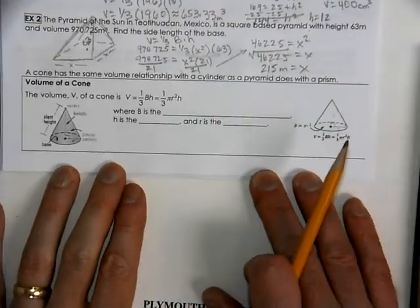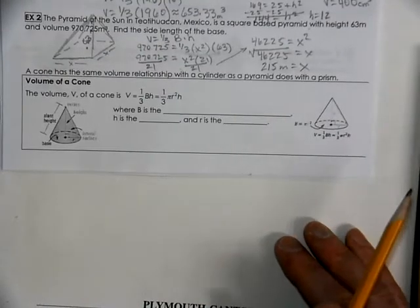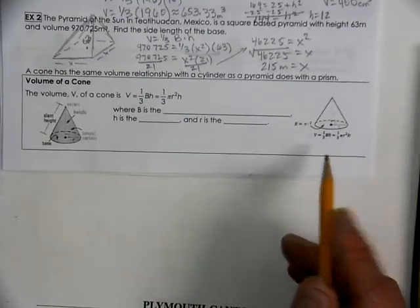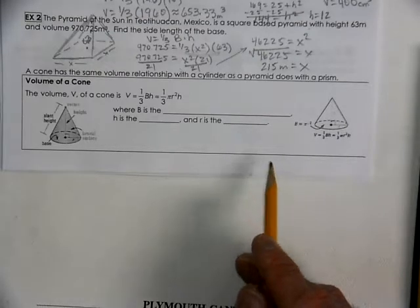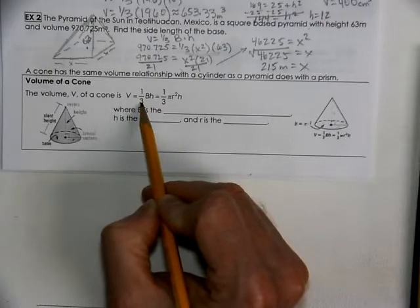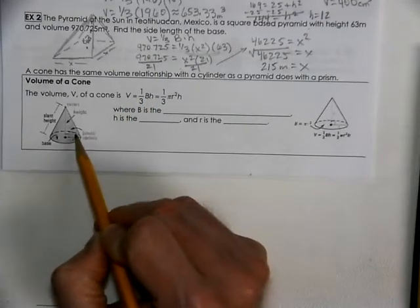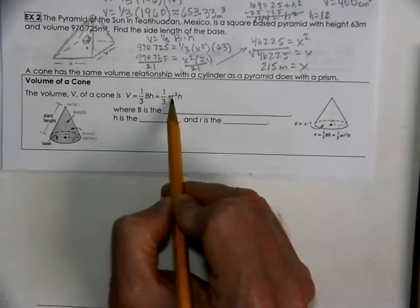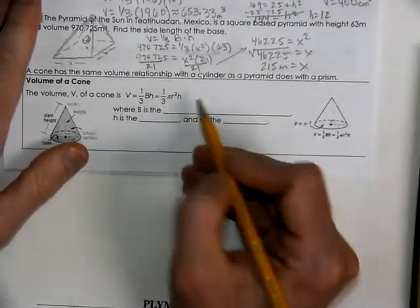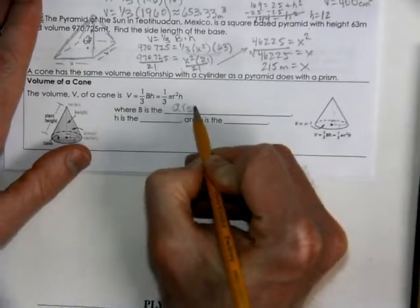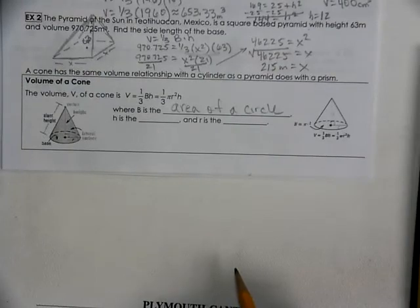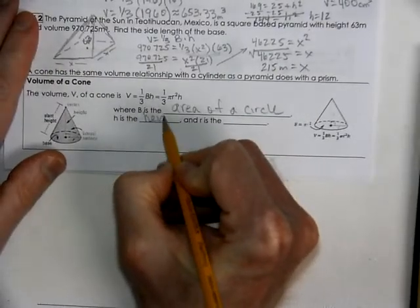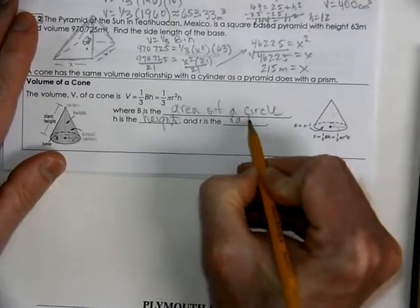Next we have a cone. The video showed that it took three cones to fill up one cylinder with the same base and same height. So the volume formula is still one-third times B times h, but since the base is always a circle, we write it as one-third times pi r squared times h, where B is the area of a circle, h is the height, and r is the radius.